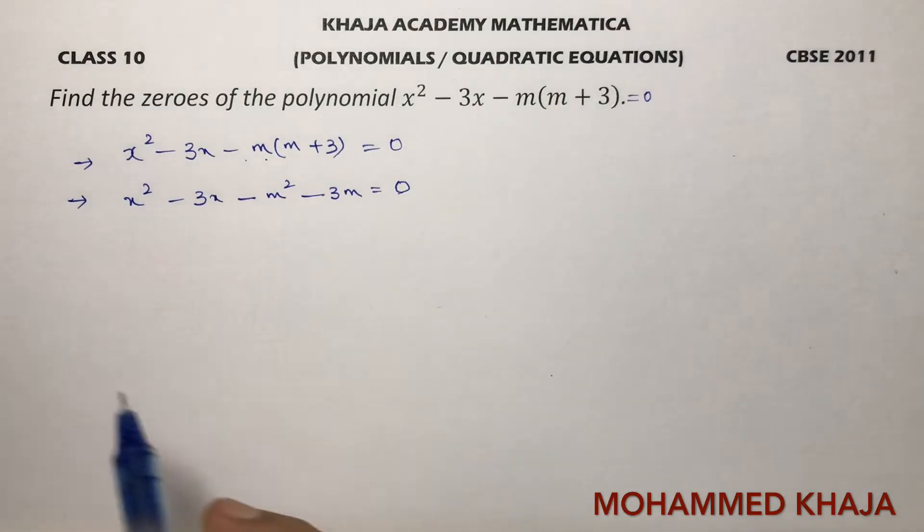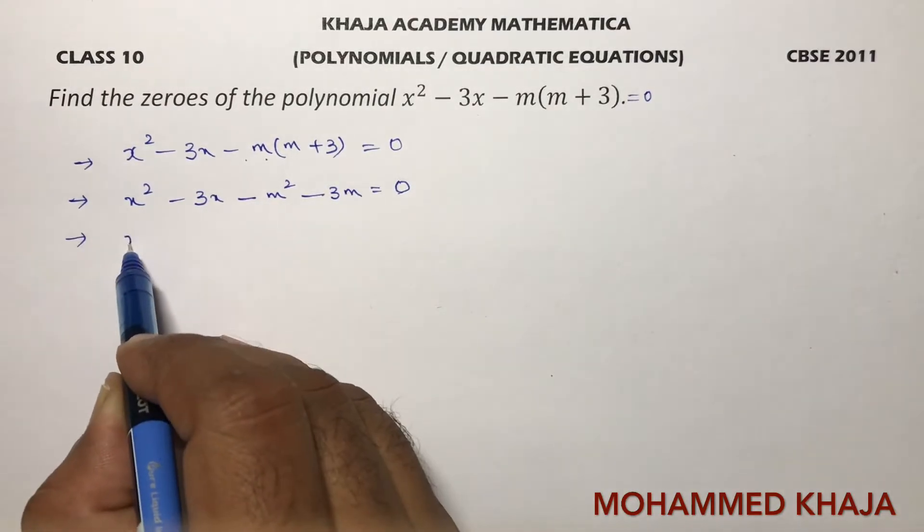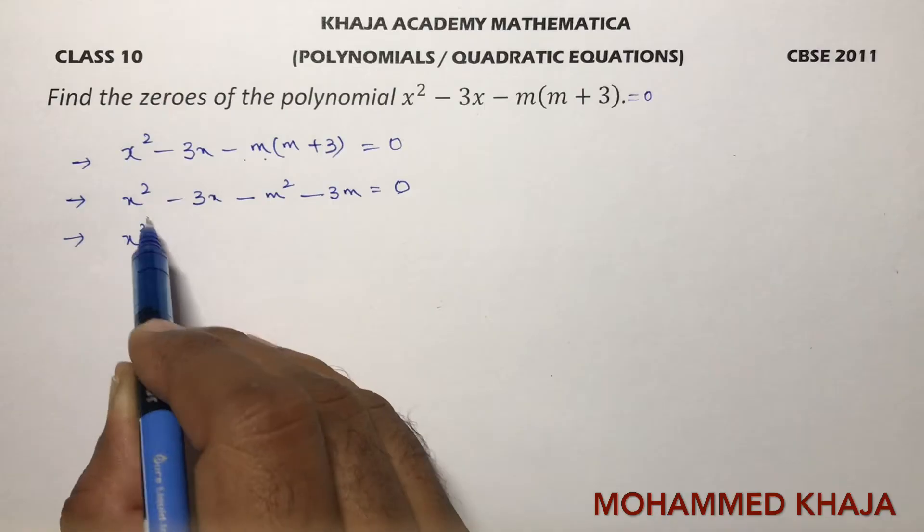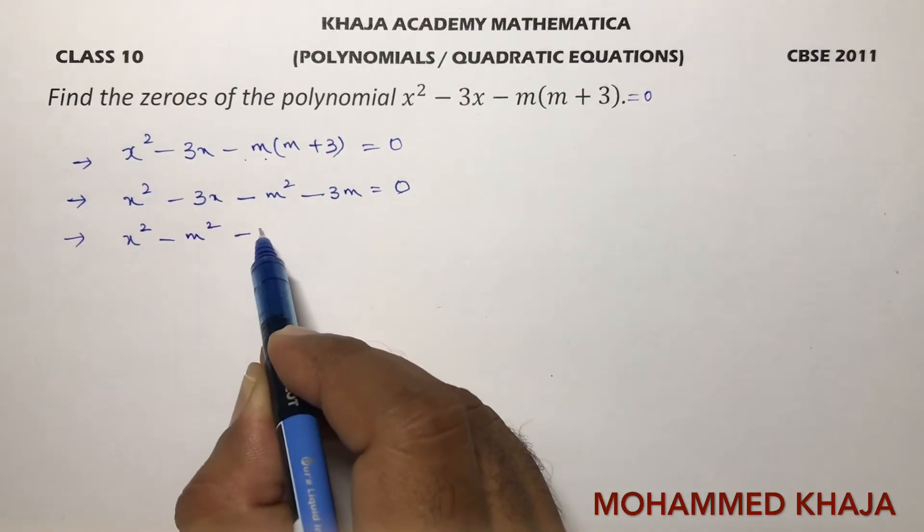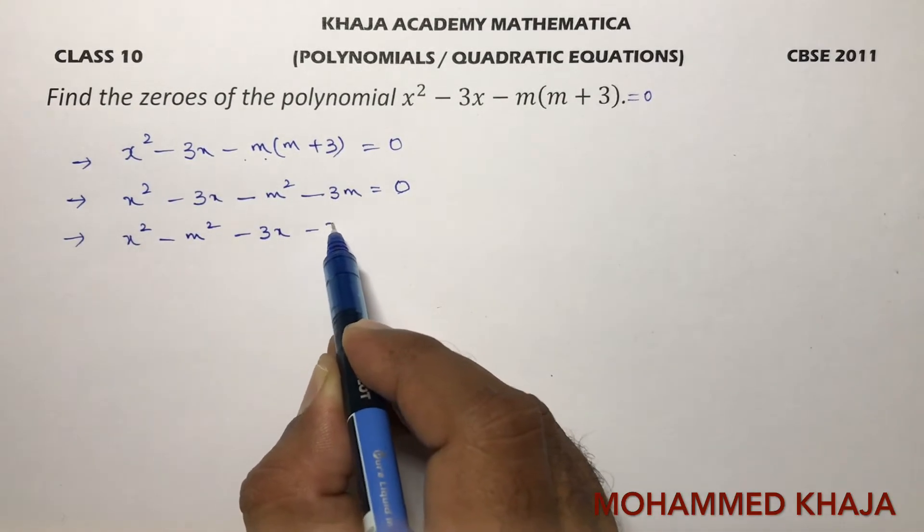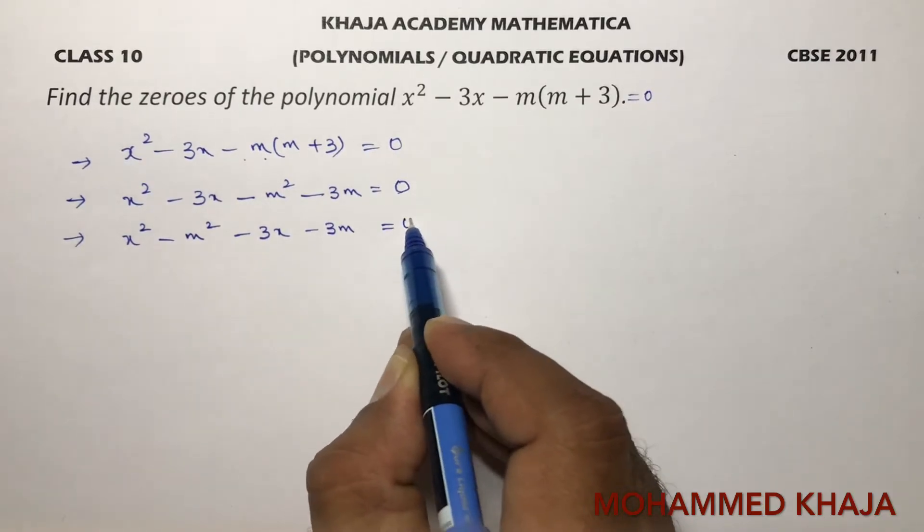Now, write the x² terms together: x² - m² - 3x - 3m = 0.